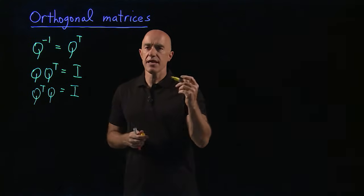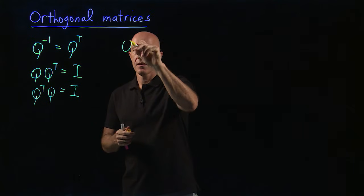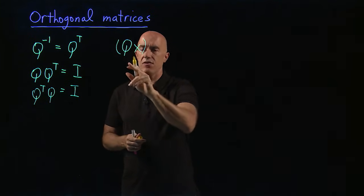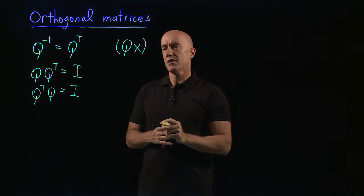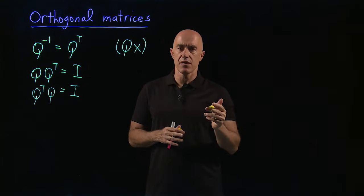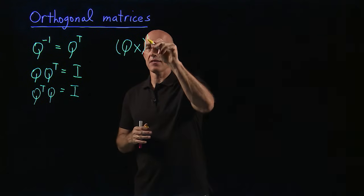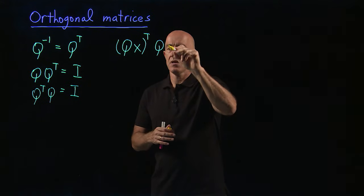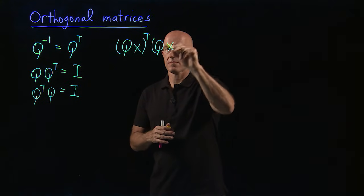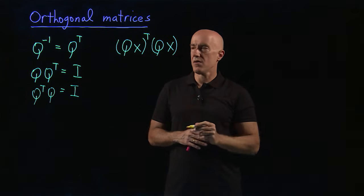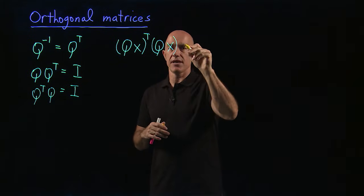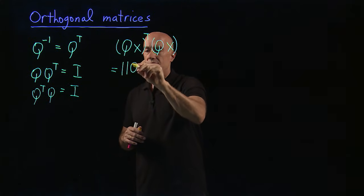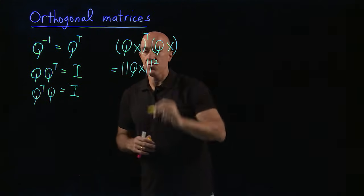If we look at Q times X. So here we have an N by N orthogonal matrix times a column vector, which has N rows, one column. And we take the transpose of that, and we multiply that times Q X. What is this thing? This is just the, by definition, this is just the length of Q X squared.